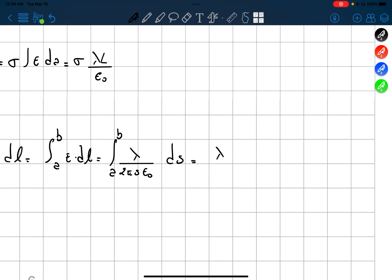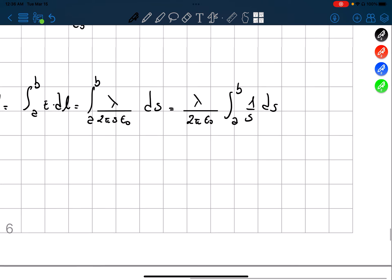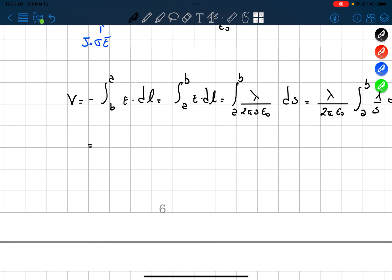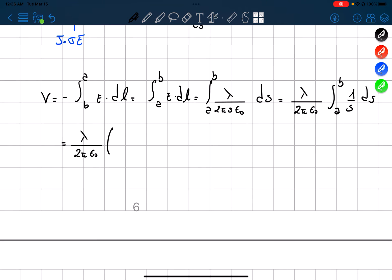We get that is equal to, take out the constant, λ over 2π epsilon nought, the integral of 1 over s ds from A to B. So we get that is equal to constants remain the same, and then the natural logarithm of B minus natural logarithm of A is equal to constant, and then the natural logarithm of B over A.